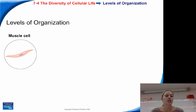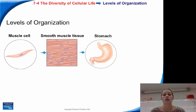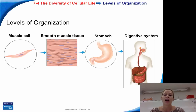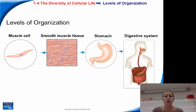Let's look at levels of organization using a muscle cell as an example. An individual muscle cell makes up smooth muscle tissue, which makes up an organ like the stomach. The stomach is then part of the digestive system. So there you have your cell, tissue, organ, and organ system. Muscle cells are specialized for contraction, and the muscle cells of the stomach are responsible for peristalsis — that contraction and churning of food for mechanical breakdown.